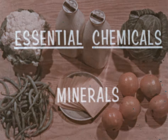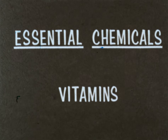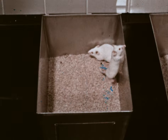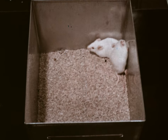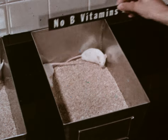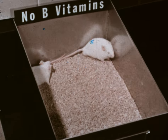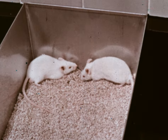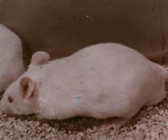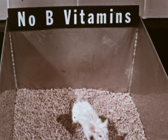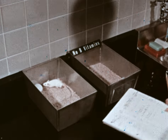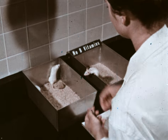Many of these same foods contain the third type of essential chemicals: vitamins. Demonstrations with laboratory animals will show why we need vitamins. These mice are healthy and alert. They will be fed over a period of weeks a diet containing adequate amounts of all vitamins. These other mice are also healthy and alert, but no B vitamins will be included in their diet. After several weeks, the animals fed sufficient amounts of vitamins are still alert and in good health. However, the animals which have not received B vitamins are clearly sick. Through thousands of similar experiments, scientists have determined that vitamins supply chemicals necessary for proper metabolism.